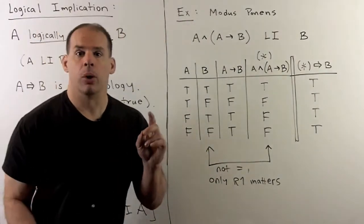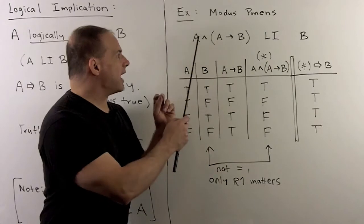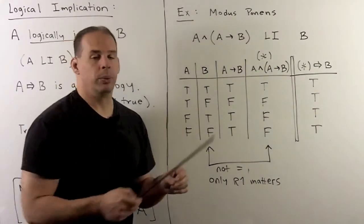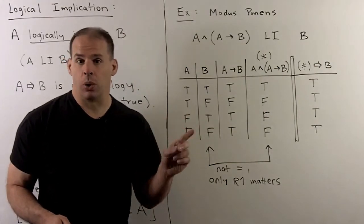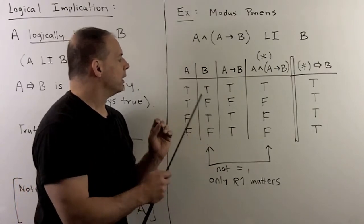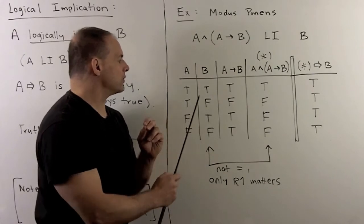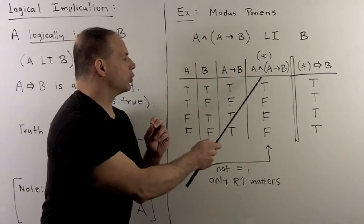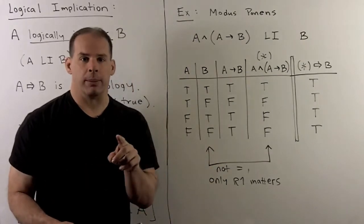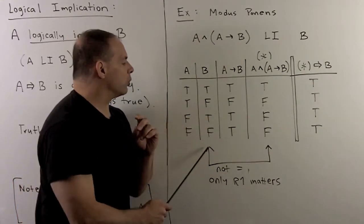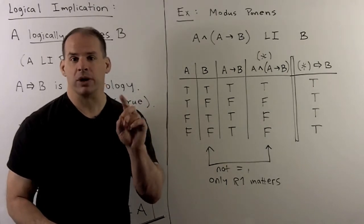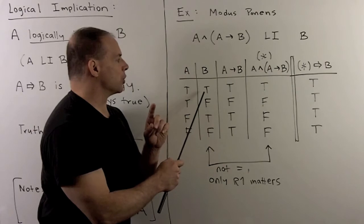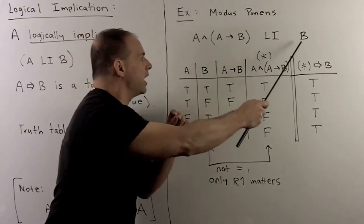For an example, let's consider modus ponens. We have the statement 'A and (A implies B)' and want to show this logically implies B. If A is true and A implies B is true, then B should also be true. Setting up the truth table: A implies B is true except where A is true and B is false. Taking A and (A implies B) — checking where both are true — we get TRUE, FALSE, FALSE, FALSE. For logical implication, we look at where the first statement is true: only the first row. We check that B is also true there, and it is. So logical implication holds.